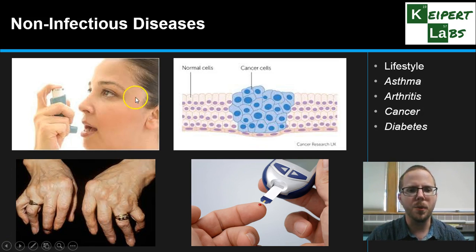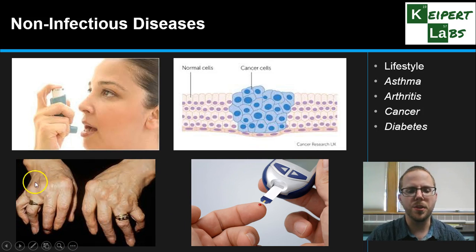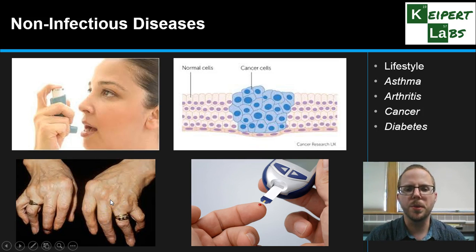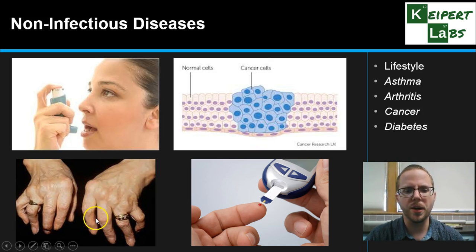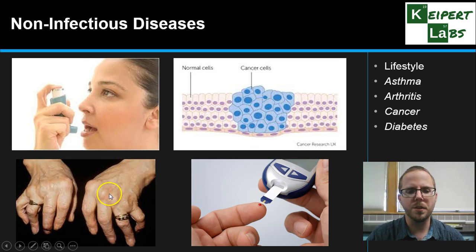Some examples include asthma — you can see an image of someone with their puffer — and arthritis. That might be osteoarthritis, where you get a swelling of the joints between the bones, or it could be rheumatoid arthritis, which is what we call an autoimmune disease, where your immune system actually attacks other parts of your body and causes damage to the joints. For example, my mum has rheumatoid arthritis. Osteoarthritis, as you see here, comes from overuse of joints over a very long time, which is why it tends to afflict older people, whereas rheumatoid arthritis is independent of that.